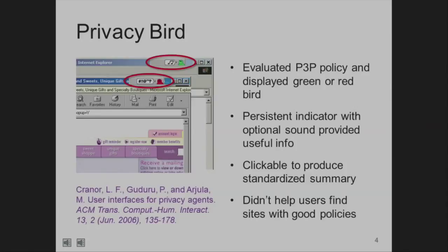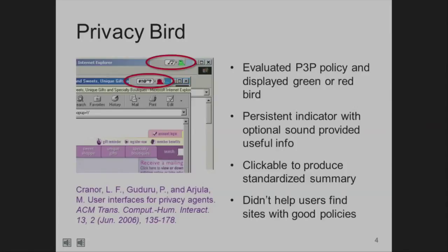Here's an example of software I was involved in building for P3P. A useful thing you can do is have your web browser read the privacy policy and compare it with what you have set up as your personal privacy preferences. If there's a match, you get a green happy bird that made green happy tweets. If it's a mismatch, you get a red angry bird that made red angry tweets — both a visual and a visceral audio indicator. We rolled this out for lots of beta users and people really liked it, but they said basically they were going to lots of websites that don't have good privacy and their problem was how to find those that do.